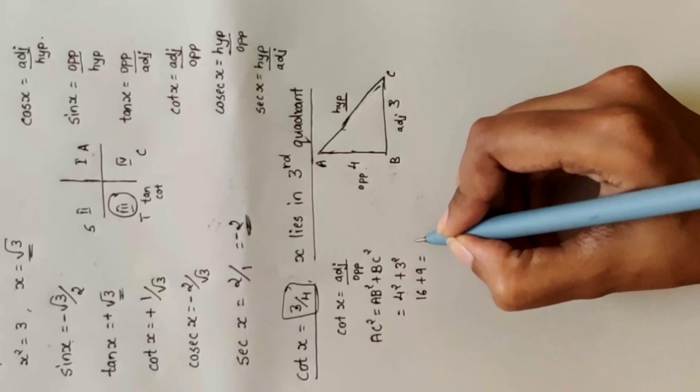Sec x = hypotenuse divided by adjacent = 13 divided by 12. Cosec x = hypotenuse divided by opposite = 13 divided by 5.